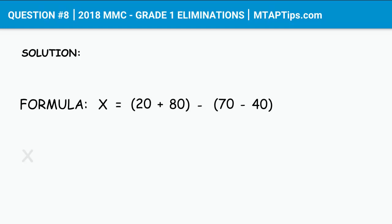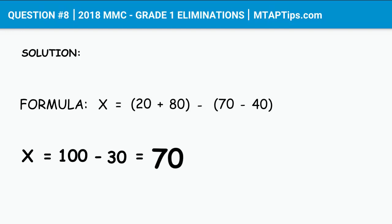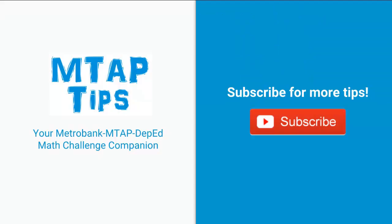If we solve this equation, we get X equal to 100, which came from 20 plus 80, minus 30, which came from 70 minus 40. So 100 minus 30 is equal to 70. The answer is 70.